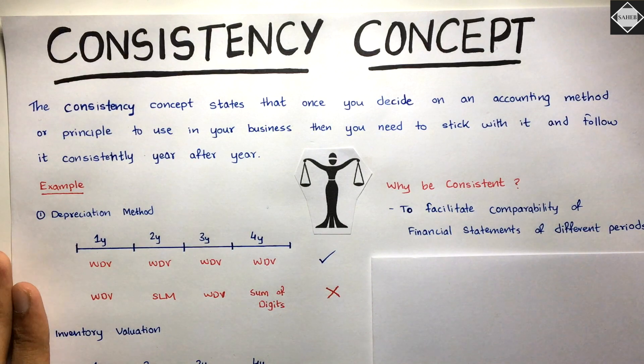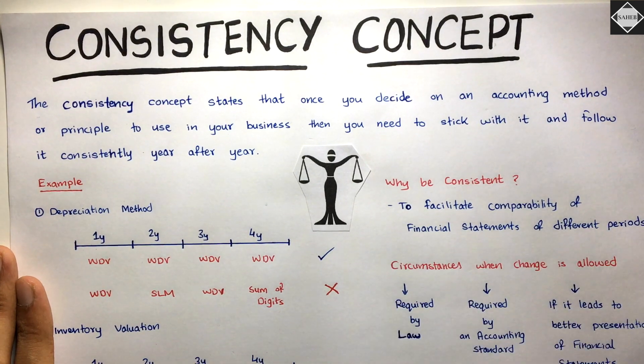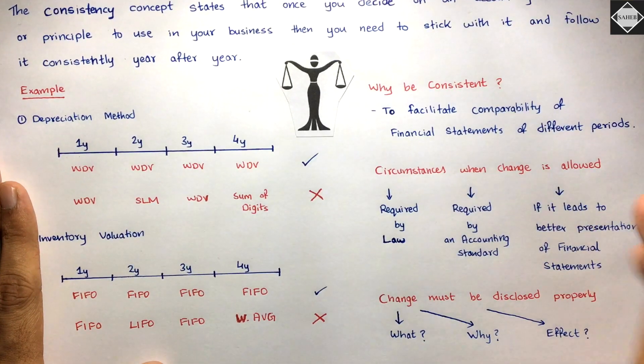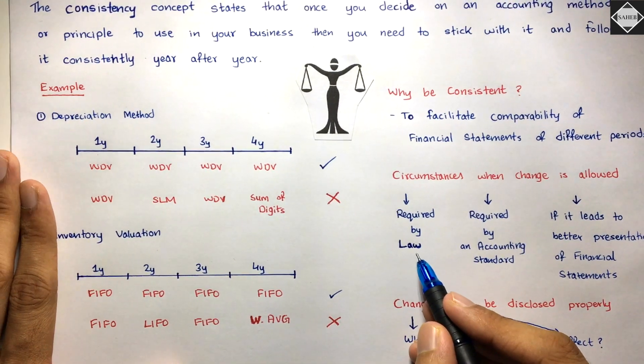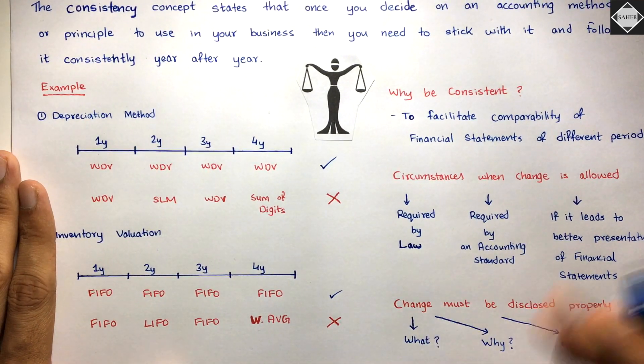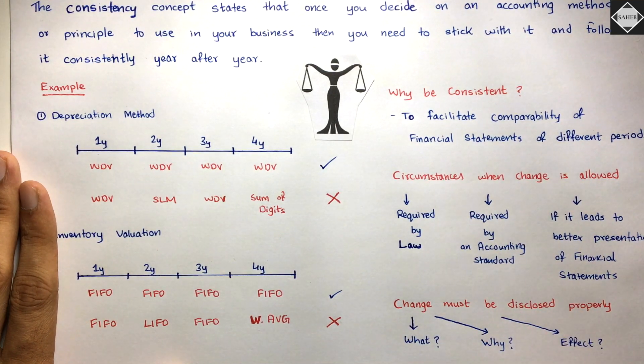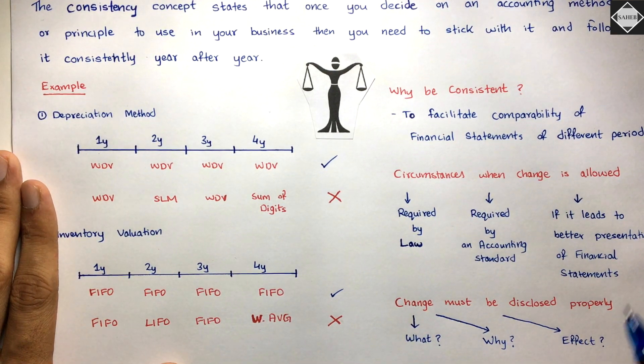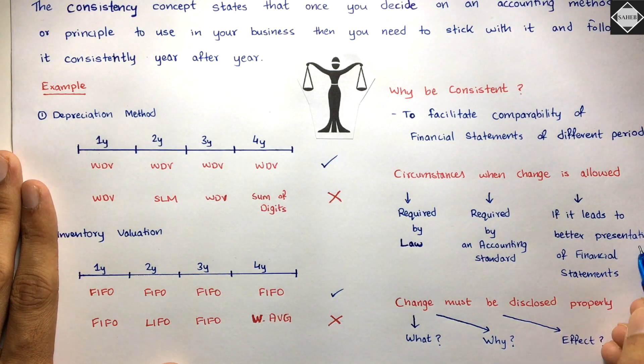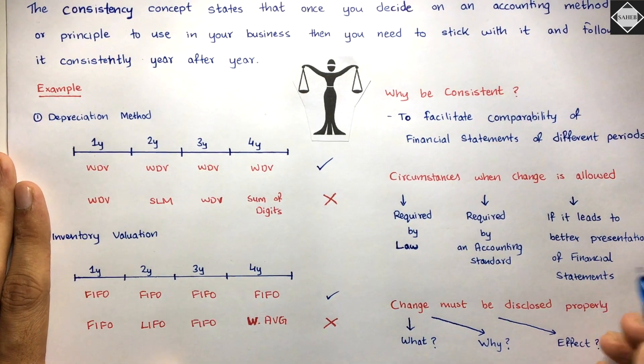Now, the circumstances when change is allowed. It's really simple - whenever it is required by law, you can change the accounting policy. If it is required by an accounting standard, you can change it. Or if it leads to better presentation of financial statements.